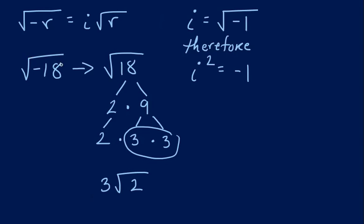So the square root of negative 18 would be 3i times the square root of 2. And all that i is doing is taking out the negative. So it's basically saying i is equal to the square root of negative 1. And that's exactly what it is.